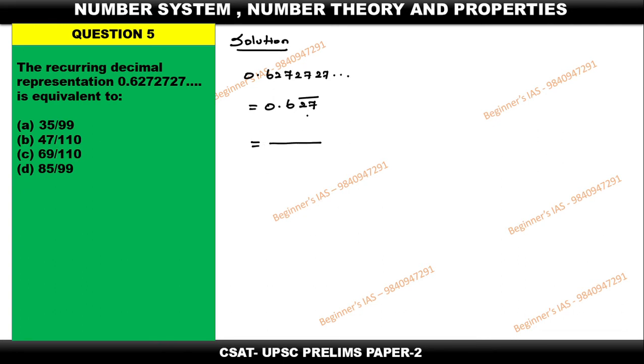How many numbers are recurring? 27, two numbers are recurring, which means write two nines in the denominator. Then how many numbers which do not recur after decimal? Six does not recur, which means one number. Therefore write one zero after writing this.